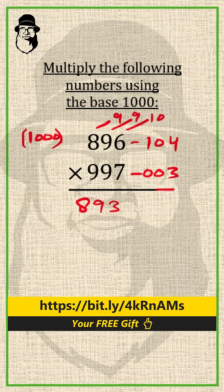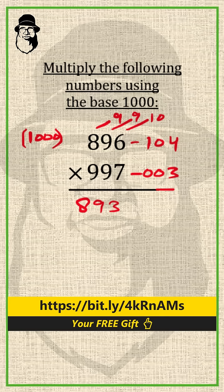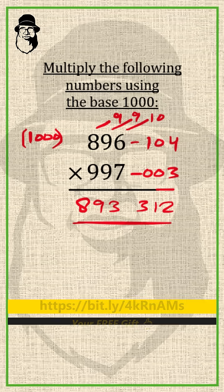That's the first part of the answer. And the second part of the answer is we multiply these two complements or deficiencies. 104 times 3 is 312. And that's our final answer: 893312. 896 times 997.